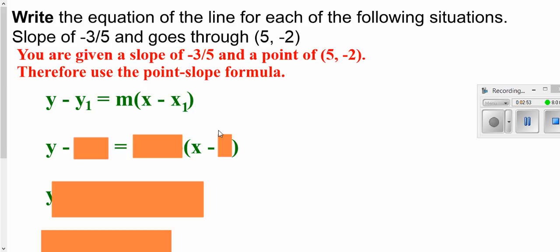So we'll start off with the point-slope formula. We'll go y minus the y value of our point. Remember your points are alphabetical, x followed by y, so y is the second one. So I'm going to plug in negative 2 for my y1. My slope is m which is negative 3 fifths. And then x1 would be the x-coordinate of my point.